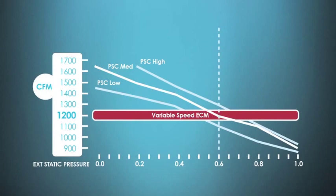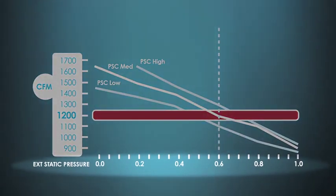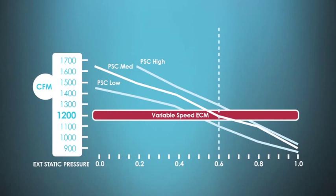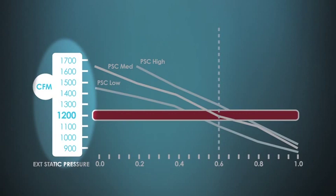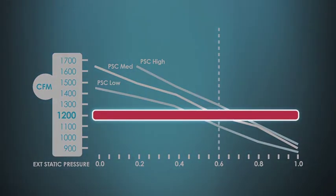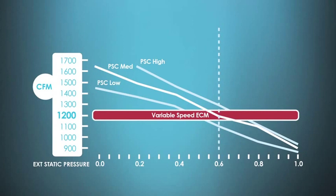Now let's look at how the variable speed motor can maintain airflow and why a PSC motor cannot. On the chart, external static pressure numbers go across the bottom from zero up to one inch total external static pressure. External static pressure is simply a measurement of the resistance to airflow in the duct system — the smaller the duct, the more dirty the filter, the more registers that are closed, the higher your external static pressure. On the left side we see CFM, and we'll go with the industry standard of 400 CFM per ton. The variable speed motor selected for 1200 CFM for three ton of cooling will maintain 1200 CFM all the way up to one inch of external static pressure.